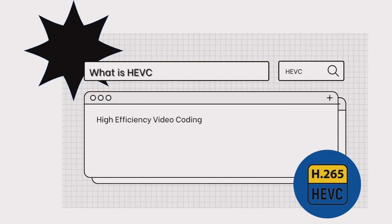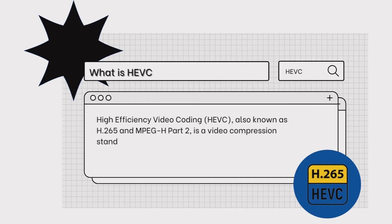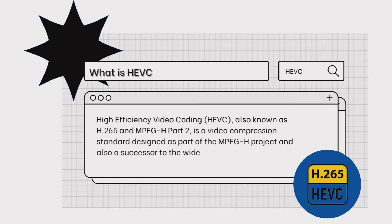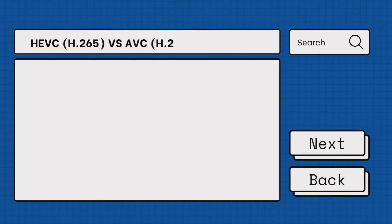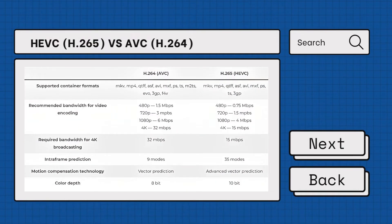High Efficiency Video Coding (HEVC), also known as H.265 and MPEG-H Part 2, is a video compression standard designed as part of the MPEG-H project and a successor to the widely used Advanced Video Coding, or H.264 codec. HEVC was designed to offer significant improvements in compression efficiency over H.264, meaning it can provide the same level of video quality at a lower bit rate, or higher video quality at the same bit rate.